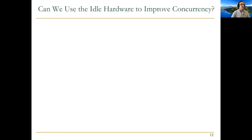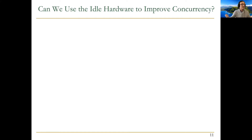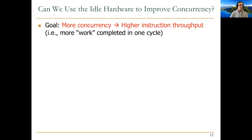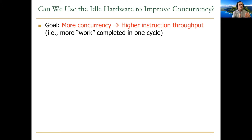People realized this and asked: can we use idle hardware to improve concurrency? That hardware has to be there because instructions need it at some point — maybe not this cycle, but five cycles later. So why not use it for other purposes? The benefit of more concurrency is higher instruction throughput. Remember the performance equation: number of instructions times CPI times clock cycle time. If we reduce CPI — equivalently, increase IPC — we reduce execution time of the program.